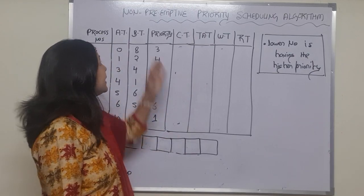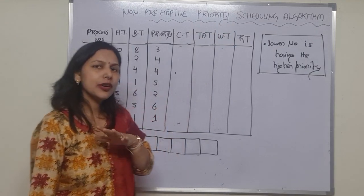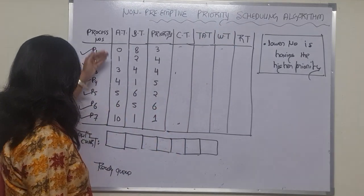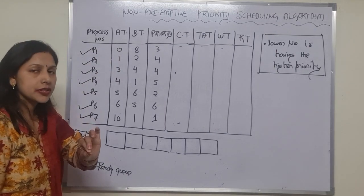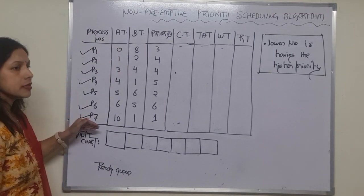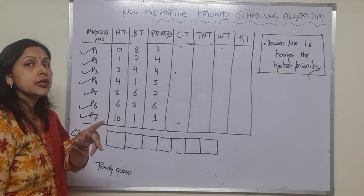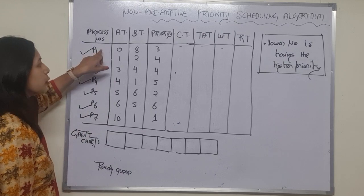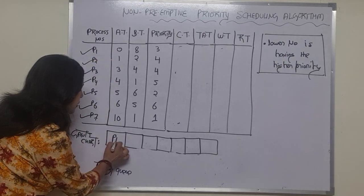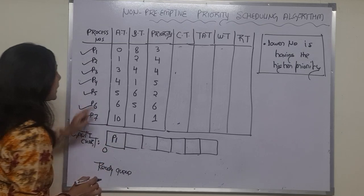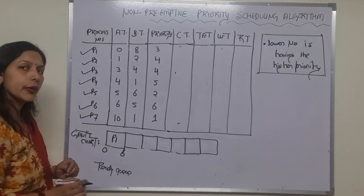First of all, check the arrival time — who is arriving first out of these seven processes. Process number P1 is arriving first, from time 0. What is the burst time of P1? That is 8. So P1 runs from 0 to 8.